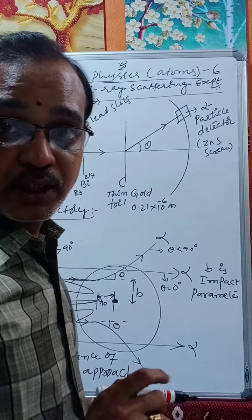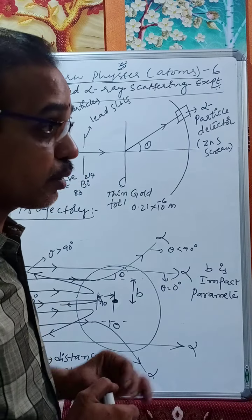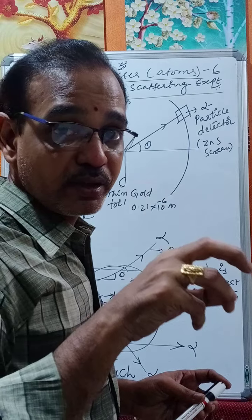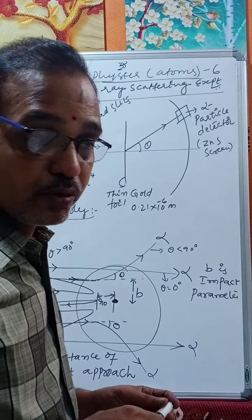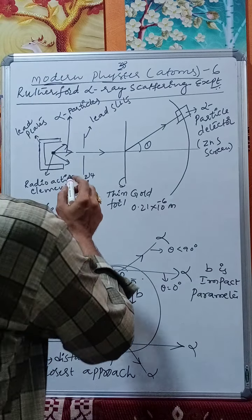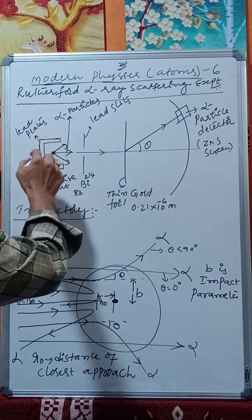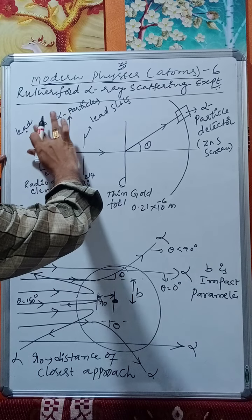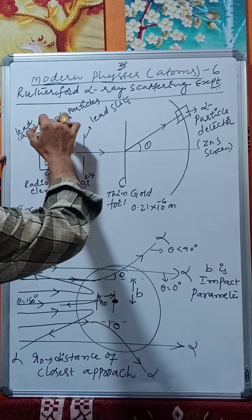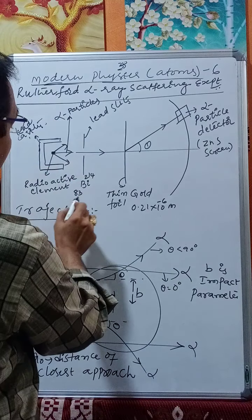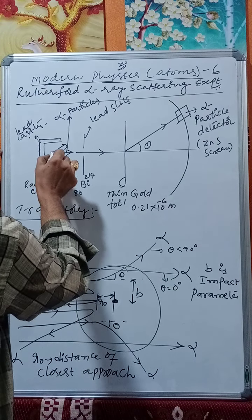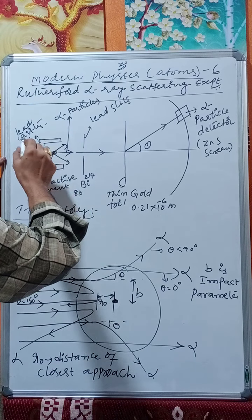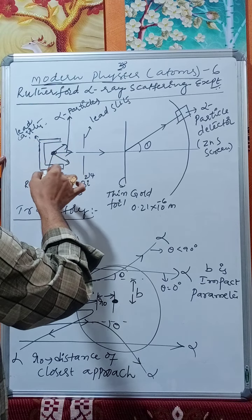This experiment reveals the positive nature of the nucleus. The atom consists of a central core called the nucleus, which always carries a positive charge. In the experiment, a lead cavity or lead plates are used, which contains a radioactive element — bismuth, whose atomic number is 83.